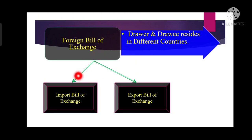The foreign bill of exchange is further classified into two types: the import bill of exchange and the export bill of exchange. In an import bill of exchange, the bill is drawn by the exporter of another country on an importer of our country. The export bill of exchange is where the bill is drawn by our country's exporter on the importer of some other country. So that is called the export bill of exchange.